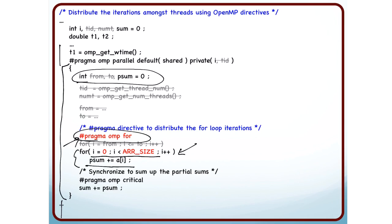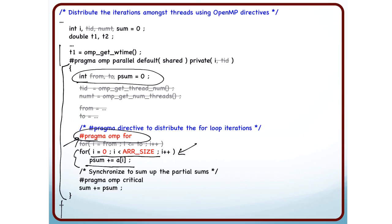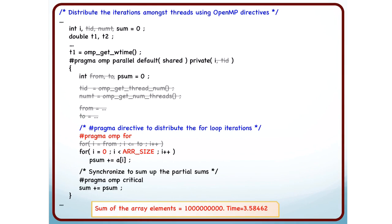I am writing this PSUM plus equal to ai. PSUM is private to each thread. This is a single loop but each thread is accessing a different PSUM when it is executing this loop, it is part of the loop. And the remaining code is the same. And I run this code and I get pretty much the same time that I got earlier.